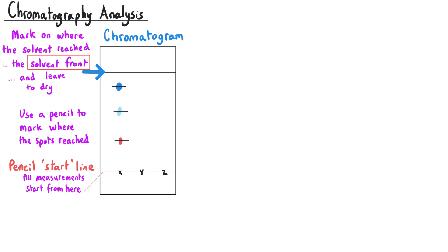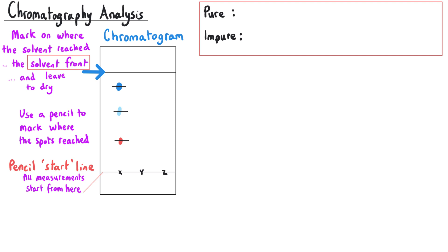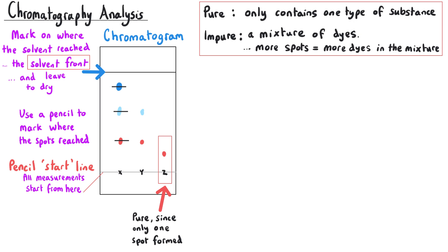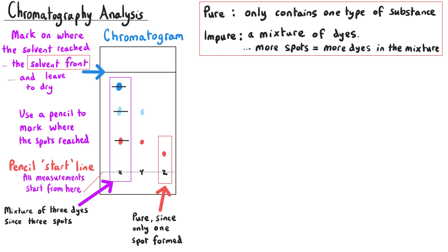We can use a chromatogram in a variety of different ways. First of all we can determine whether or not a sample is pure, because if it is pure we will only get one spot on our paper. We can also look at how many components there are in a mixture — the number of spots tells us the number of inks in the original sample. Three spots means three inks; two spots means two inks.